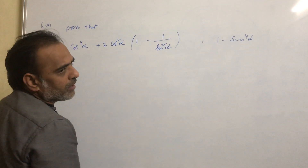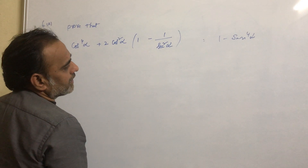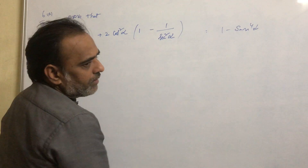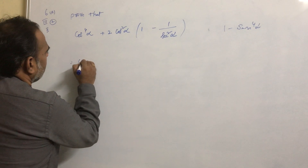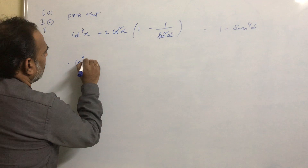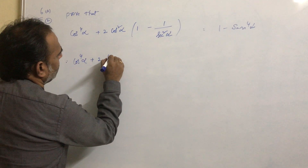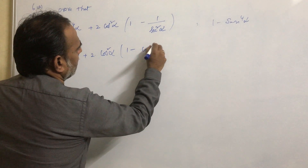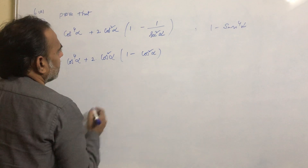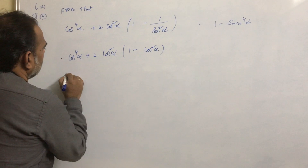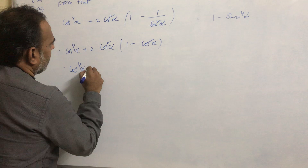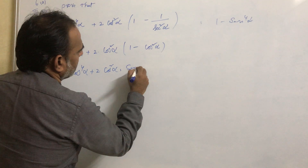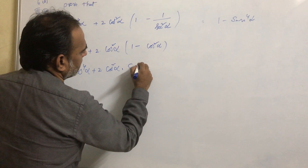1 - cos²α equals how much? 1 - cos²α equals sin²α. So in that way we will proceed. This can be written as cos⁴α + 2·cos²α·(1 - cos²α). Since 1 - cos²α = sin²α, we get cos⁴α + 2·cos²α·sin²α.